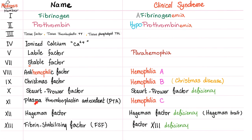Here are the coagulation factors — you have the number, the name, and the disease. Remember hypoprothrombinemia? We had bleeding. Remember afibrinogenemia? We had bleeding or thrombosis. And today we talk about Factor V Leiden. In Factor V Leiden, we have thrombosis.